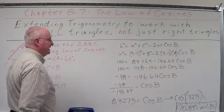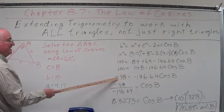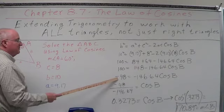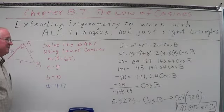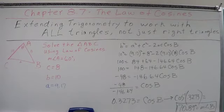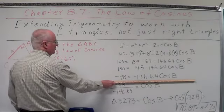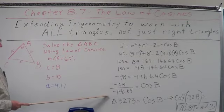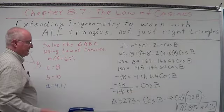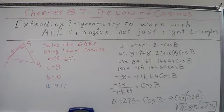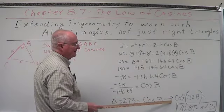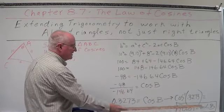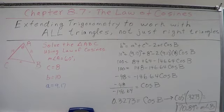100. Let's take this on out. We're going to subtract 148 from both sides. Don't get hung up on the math. You're supposed to know how to manipulate these equations. We get negative 48 equals negative 146.64 cosine of B. How are we going to get cosine of B by itself? We're going to divide both sides by the negative 146.64. When we do that, we get positive 0.3273 equals the cosine of B. Flip that around. Cosine inverse of 0.3273 equals 70.89 degrees is the measure of angle B.